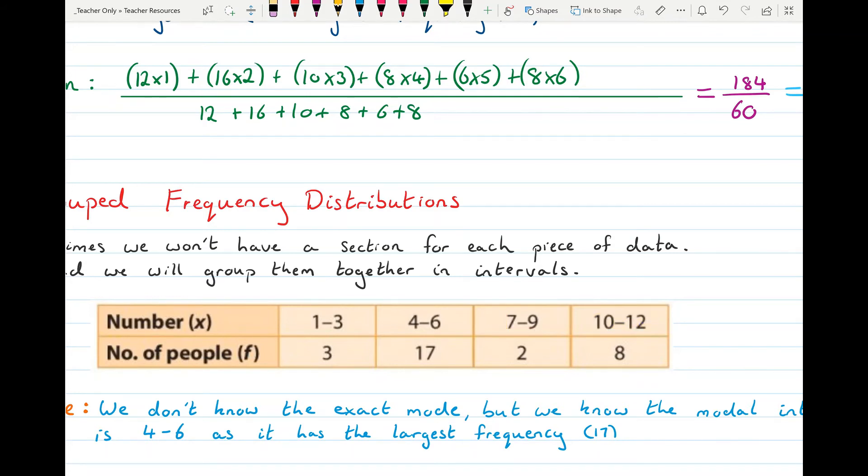And the frequency then, well there are 3 people between 1, 2 and 3. There are 17 people between 4, 5 and 6. There are 2 people between 7, 8 and 9 and there are 8 people between 10 and 12. So that's how the grouped frequency table works.